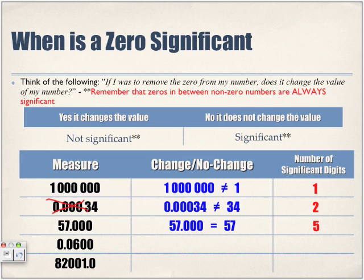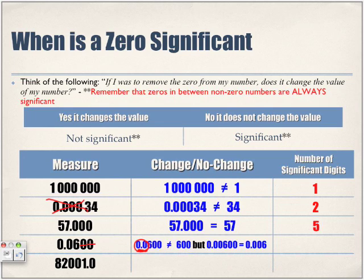For 0.0600, this is a little tricky because we can't look at all the zeros the same way. The leading zeros — if I remove them, the value changes, so 0.0600 is not equal to 600. Those leading zeros are not significant. But the trailing zeros after 6 — if I remove them, the value stays the same. So 0.0600 equals 0.06 when we remove those trailing zeros, meaning those trailing zeros are significant. How many significant digits? Three: the 6 and the two trailing zeros.